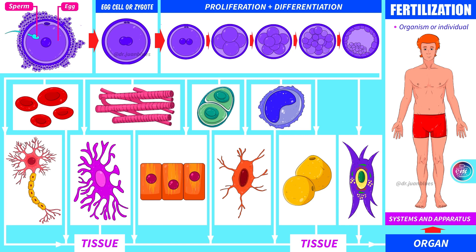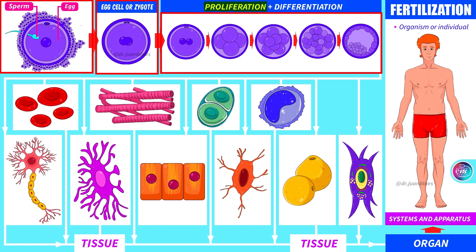Let's start at the very beginning. In the fertilisation process, the sperm and the egg unite to form a single cell called the egg cell or zygote. This cell, not specialised in anything, begins to develop, to proliferate and to differentiate itself. Each one of the new cells will develop in a different way, preparing itself and adapting its structure to fulfil a specific function. The cells which are similar to each other and which have a similar purpose will start grouping together to form different tissues.